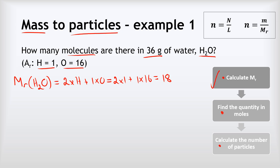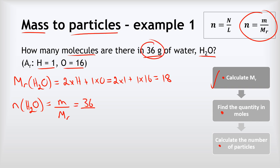That's the first step done. For the second step, we find the quantity in moles of water using the equation: number of moles equals mass over relative formula mass. So the number of moles of H₂O equals M over MR. The mass in the question is 36 grams and the relative formula mass we just calculated was 18, so we do 36 divided by 18, which gives us 2 moles.